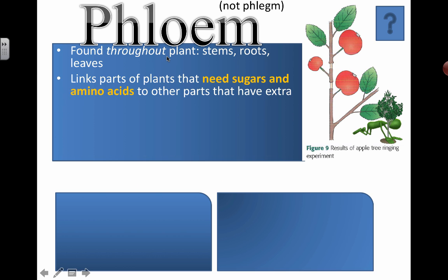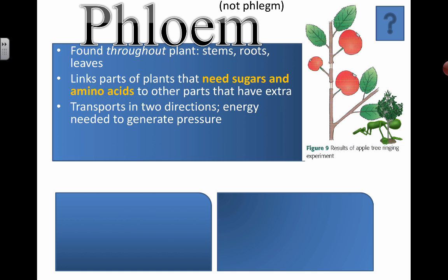Phloem is a tissue found throughout the plant - in the stems, the roots, and the leaves. It links parts of the plant that need sugars and amino acids, which are also organic substances, to other parts that have extra sources of these. Phloem can move things in two different directions depending on where we need the sucrose to actually get to. So it's like a subway system and it can move organic substances back and forth, transporting in two directions.